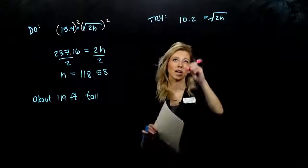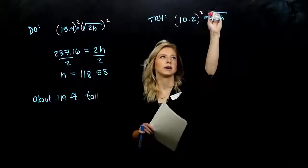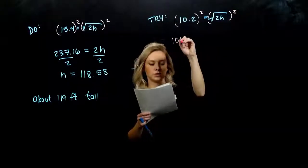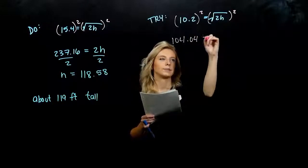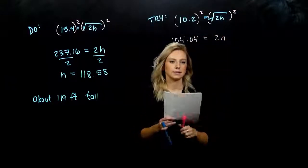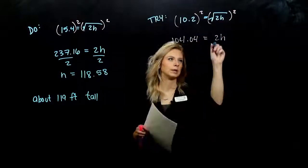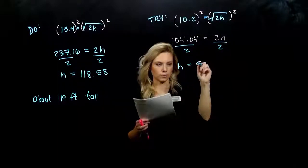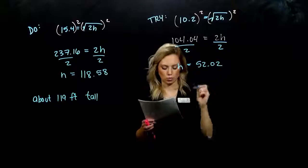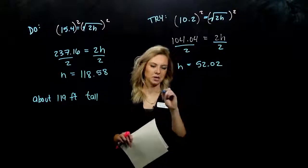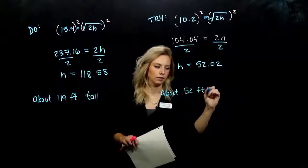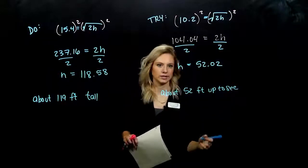So again, what had to happen first? Square both sides. Undo the radical. And over here, this turns into 104.04. Right hand side is 2h. We need h on its own. And it is equal to 52.02. So how high up does he have to be? About 52 feet up to be able to see out to the iceberg.